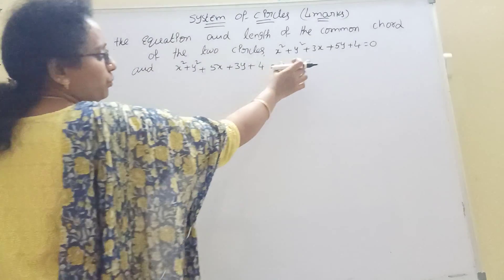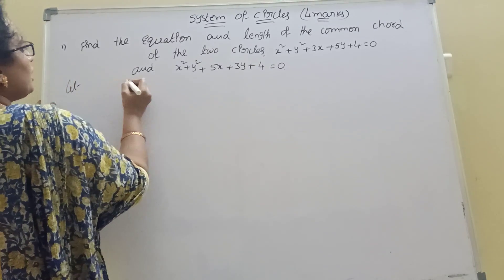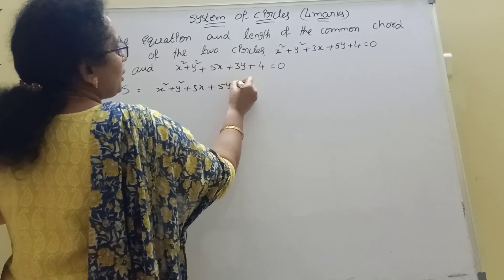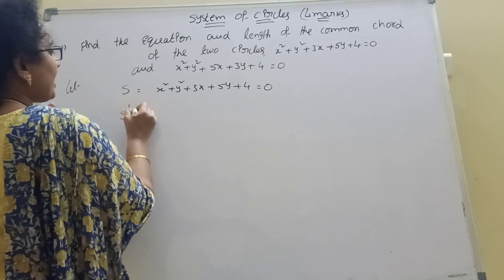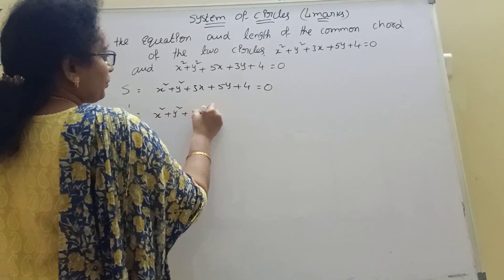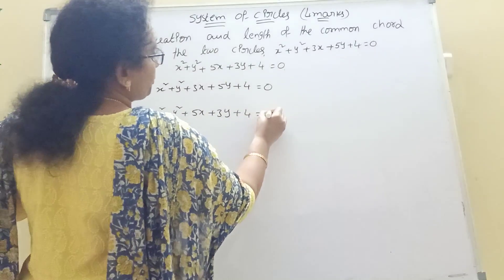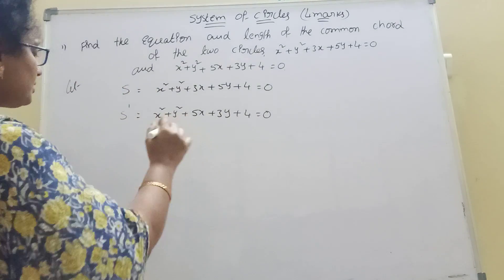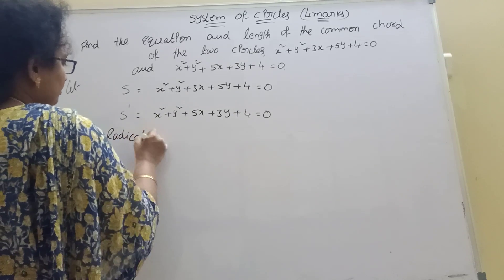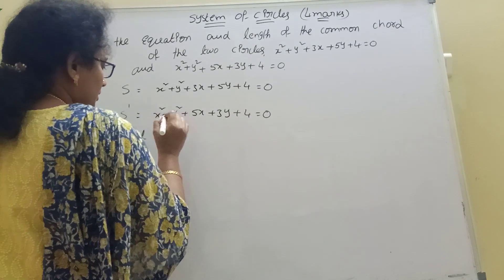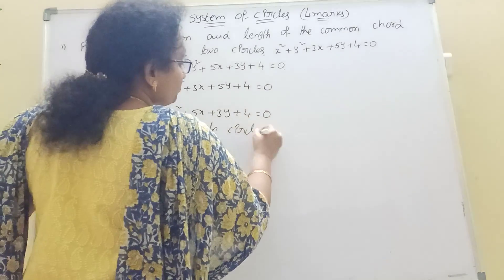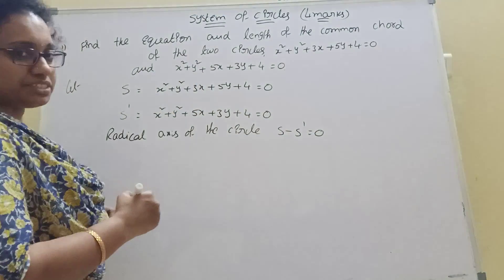2 circles. First, S is equal to circle 1. S is circle 2: x² + y² + 3x + 5y + 4 = 0. S dash: x² + y² + 5x + 3y + 4 = 0. Two circles. S equal to S dash. If we go to the radical axis, we will find the radical axis of the circle. Formula 1: S minus S dash equal to 0. Radical axis formula: S minus S dash equal to 0.